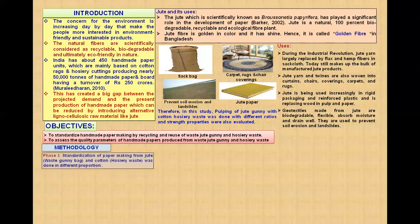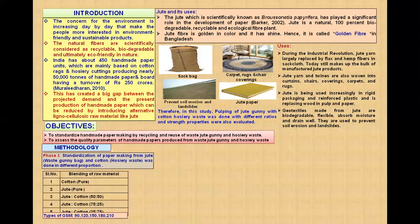The methodology part has two phases. First phase is the standardization of paper making from jute waste and cotton hosiery waste. In this, we have developed different proportions: cotton in pure form means 100% and jute 100%, cotton and jute in 50-50 ratio, jute and cotton in 75:25 ratio, and jute and cotton 25:75 ratio.